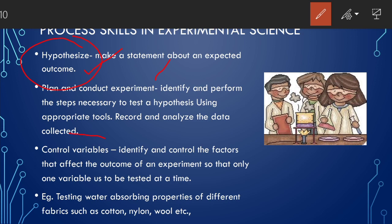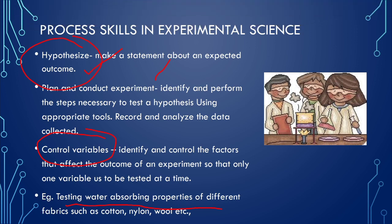Here you have taken some variables also, considered some variables. Some variables are control variables. Some of them are fixed variables. Here in our experiment, water and light were fixed variables and soil was the control variable. Here I am also giving an example for you. If you want to test water absorbing property of different fabrics such as cotton, nylon and wool, you can definitely use this set of process skills to solve the problem and make an observation.